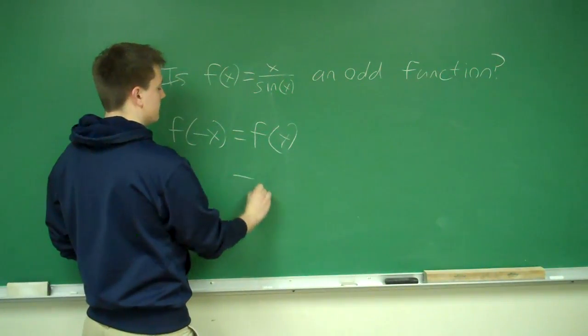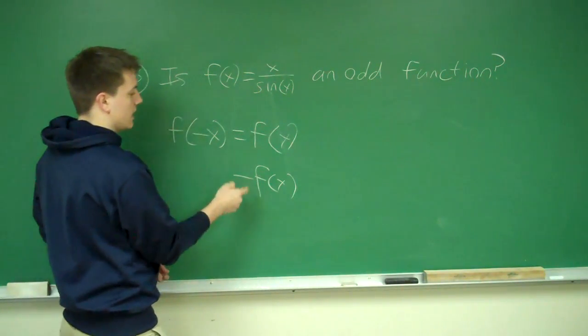And if this equals f of x, we have an even function. If it equals negative f of x, we have an odd function.